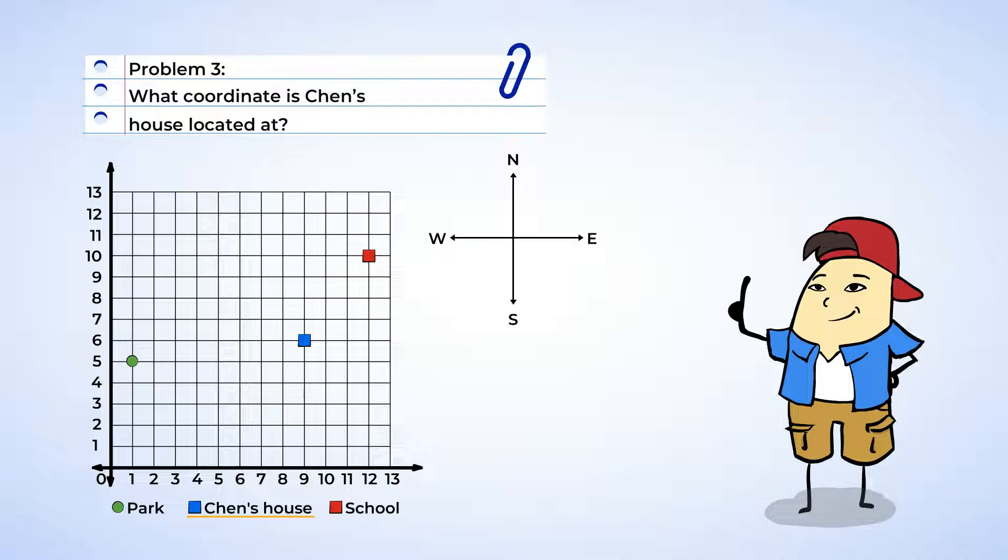Chen's house is located how many units along the horizontal or the x-axis? Well, there are 9 units until we get to Chen's house. And next, we want to see how many units up his house is. And there are 6 units to get to Chen's house. And this means that the coordinates for Chen's house are 9, 6.